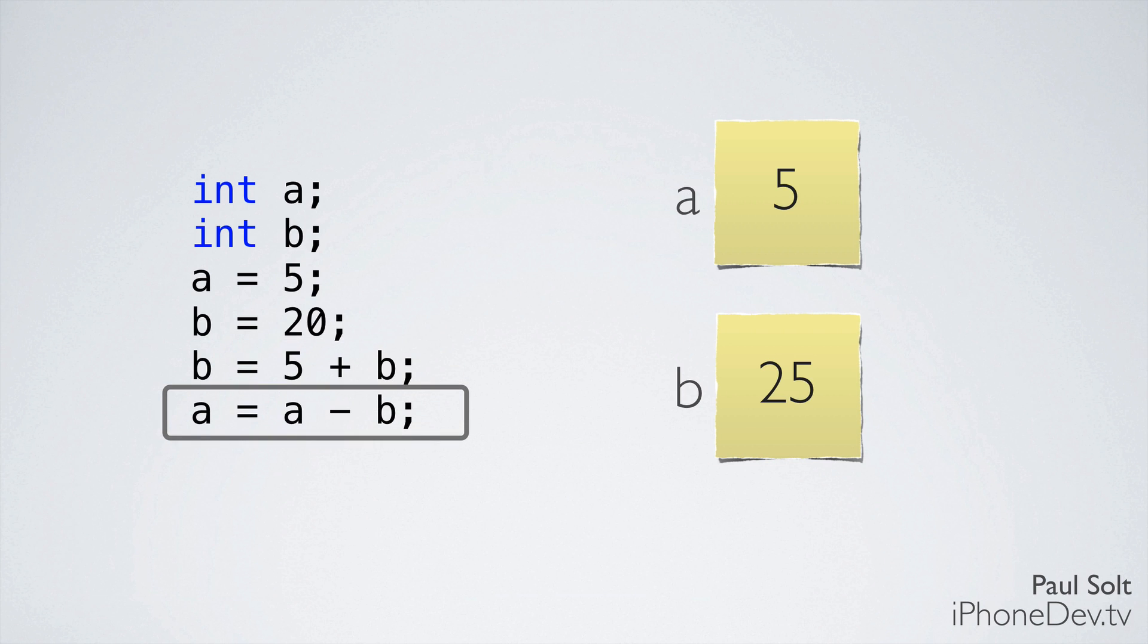We'll do the same thing for a. Notice here we're doing a minus b. So if you were following along earlier and you didn't change the value of b, you would get a different answer than if you did. So we substitute in the new value of b, which is 25, we get 5 minus 25, which is negative 20.